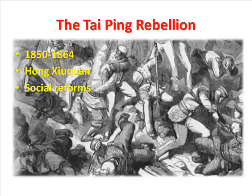The Taiping Rebellion had several goals, including giving land to all peasants and treating women as equals to men. People were also required to give up their private possessions — money, food, and clothing would be shared equally by all. Hong outlawed alcohol, tobacco, and the practice of binding women's feet. In March 1853, the rebels seized Nanjing and killed 25,000 people.